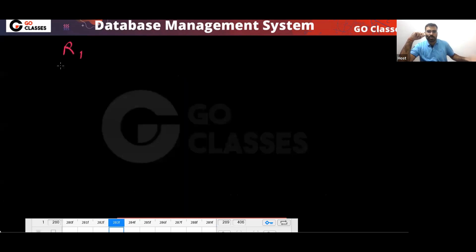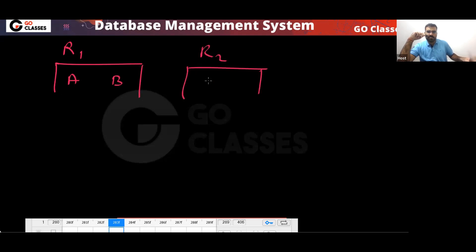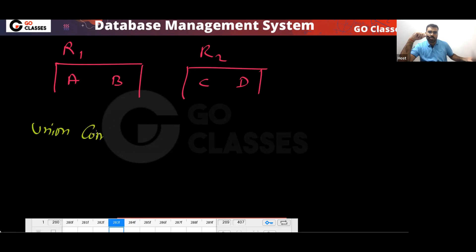R1 table has attributes A and B. R2 table has attributes C and D. They are union compatible. What does union compatible mean? You can also call it type compatible.